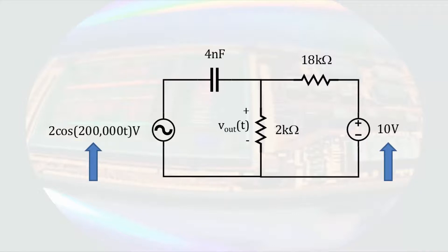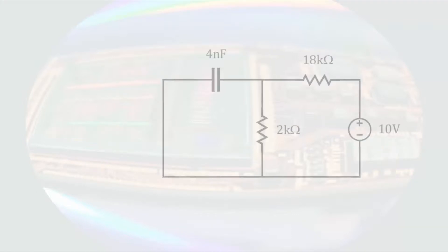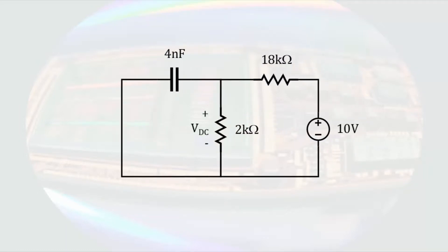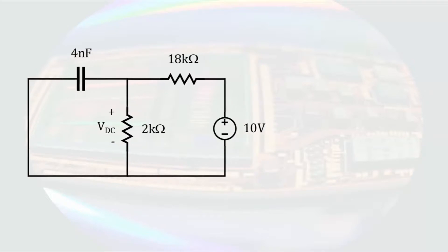If we turn off the sinusoidal source, we can look at the output due to the 10 volt DC source. Remember that turning off a voltage source results in 0 volts, or a short circuit being placed where the source was. The capacitor blocks DC, so to determine the DC voltage across the 2 kilohm resistor we can simply do voltage division. This results in a DC potential of 1 volt.